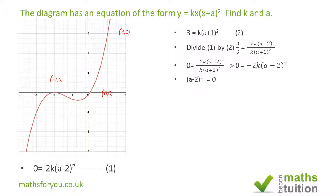So we then have that a minus two all squared is equal to zero. If we take the square root of both sides, a minus two equals zero, which means that a is equal to two.